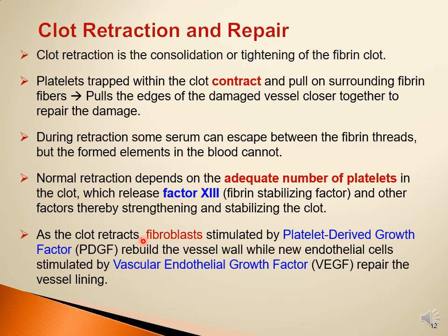Normal retraction depends on an adequate number of platelets, which release factor XIII and other factors that strengthen and stabilize the clot. As the clot retracts, fibroblasts in the blood vessel wall are stimulated by platelet-derived growth factor (released by platelets) to rebuild the vessel wall. New endothelial cells are also stimulated by vascular endothelial growth factor to repair the blood vessel lining, resulting in intact smooth endothelium covering the damaged area.